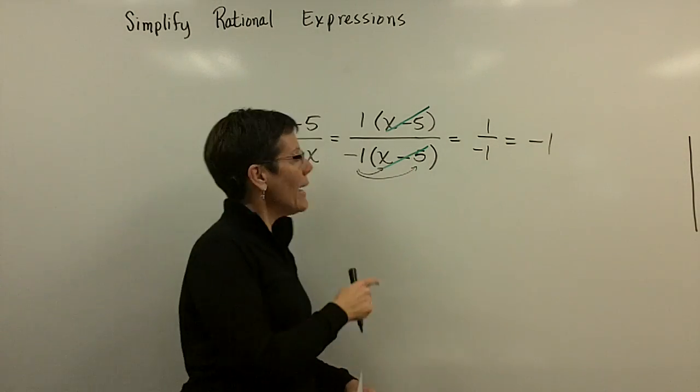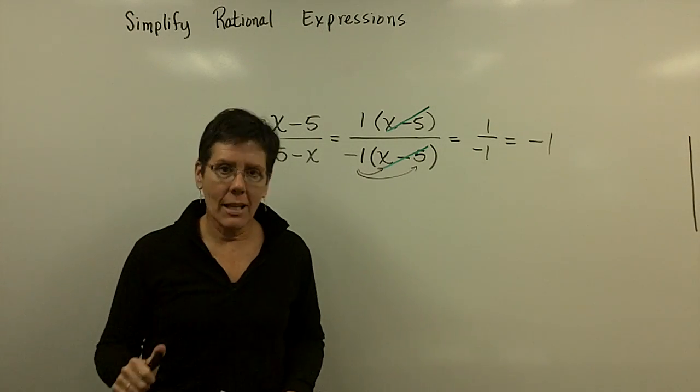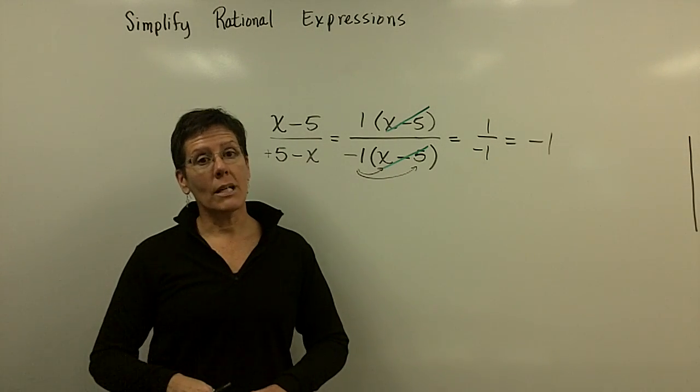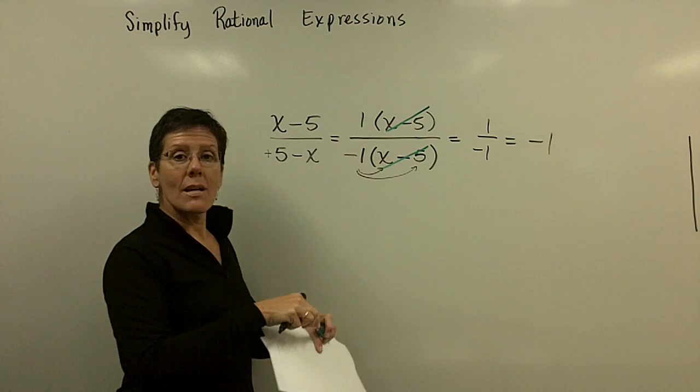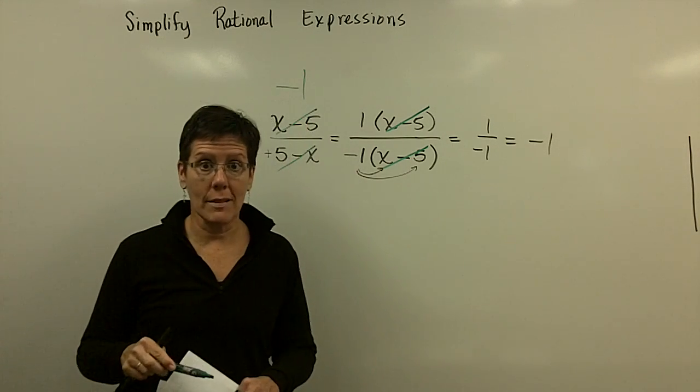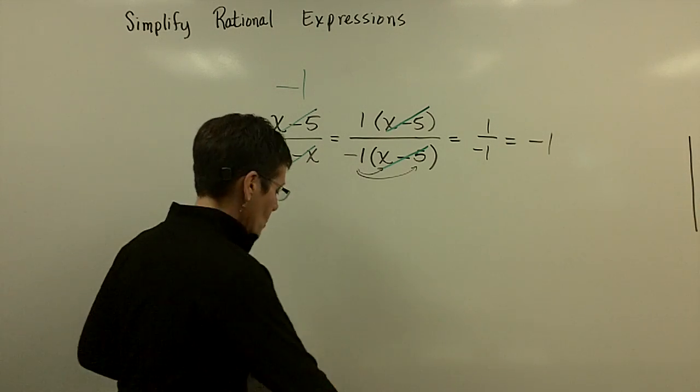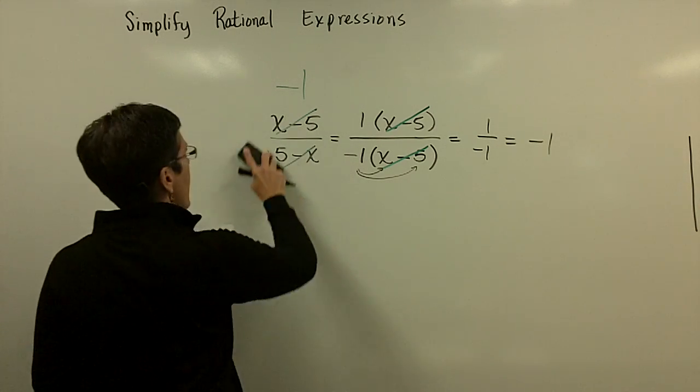Or, when you have two binomials that are opposites, they are just equal to a negative 1. What I'll regularly do is, when I see those, I'll just cross them off and say I have a negative 1 left in their place. They're almost identical, they're just opposites. So, we'll see a few more of those as we go along here. The next problem's got one.